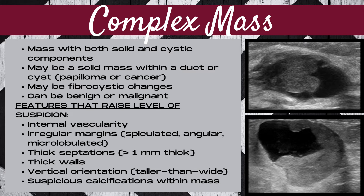Features that raise the level of suspicion of a complex mass include internal vascularity, irregular margins such as spiculated, angular, or microlobulated margins, thick septations greater than one millimeter in thickness, thick walls of the cyst, and a vertical orientation — a taller-than-wide orientation on the ultrasound image. Remember: skyscrapers, or taller-than-wide masses, are a suspicious ultrasound feature. Suspicious calcifications within the mass can also increase the level of suspicion.